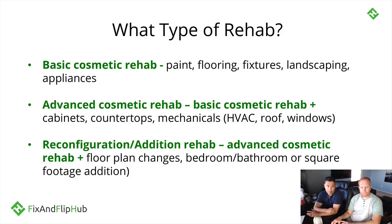The third type is a reconfiguration or addition rehab — the advanced stuff. You're changing floor plans, adding square footage, adding a bedroom or a bathroom. That's when you get into the more major work. So the three types are: basic, advanced, and reconfiguration.